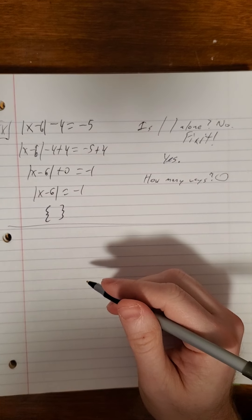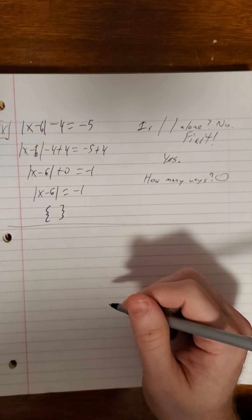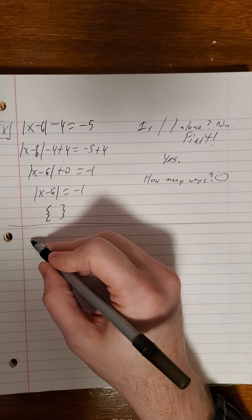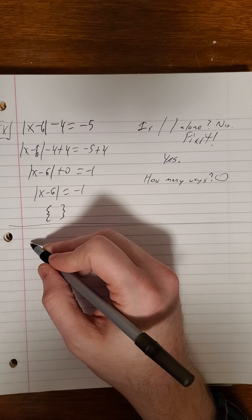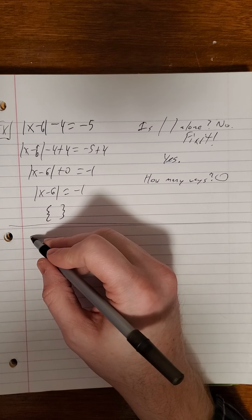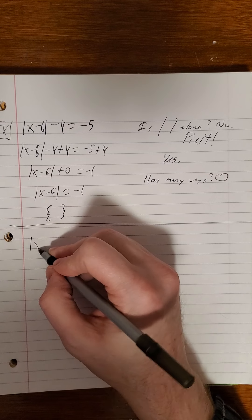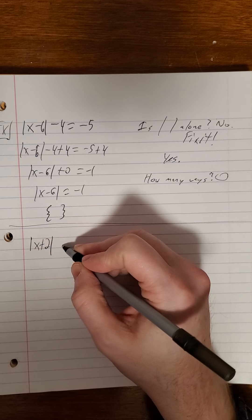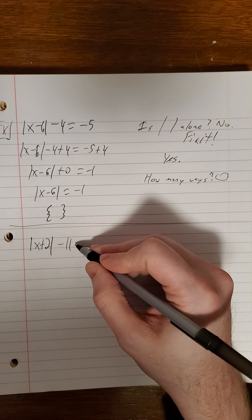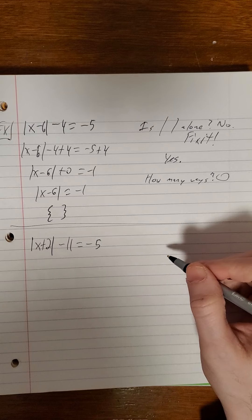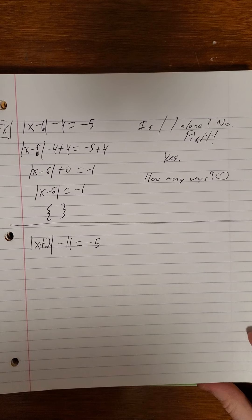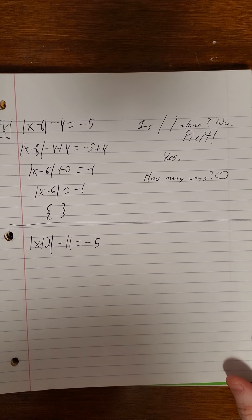Let me give you a couple to play with. We'll do them one at a time. We'll do absolute value of the sum of x and 2, minus 11, is worth negative 5. Go ahead and run through that one.